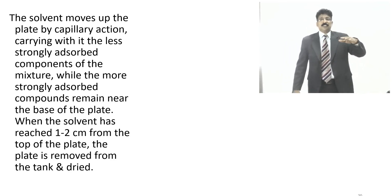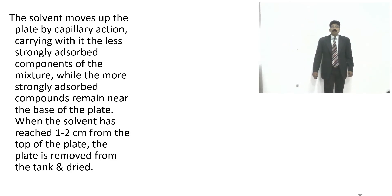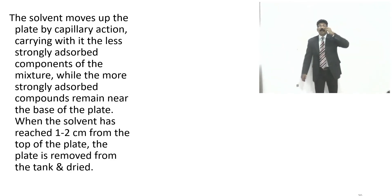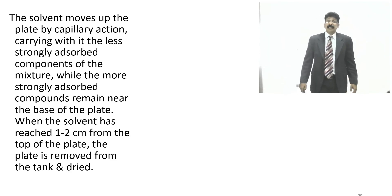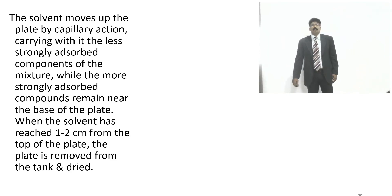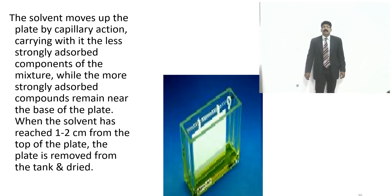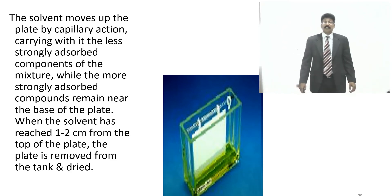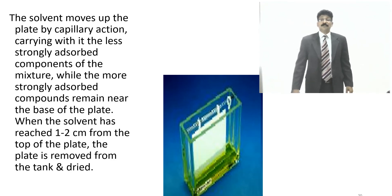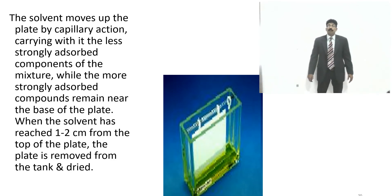The solvent moves up the plate by capillary action, carrying less strongly adsorbed components while more strongly adsorbed components remain near the base. When the solvent has reached 1–2 cm from the top of the plate, the plate is removed from the tank and dried — you should not let the solvent run to the very end. The developing chamber contains the TLC plate with solvent moving from bottom to top; remove the plate just below 1–2 cm from the top, then dry it.